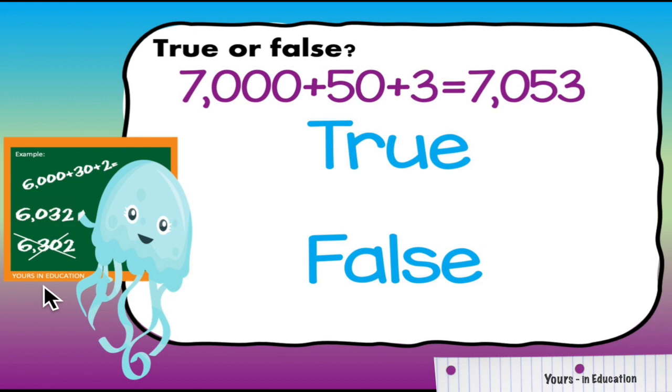Now we have a true or false question so you're going to have to decide if 7,000 plus 50 plus 3 is equivalent to 7,053 and I give you an example here.